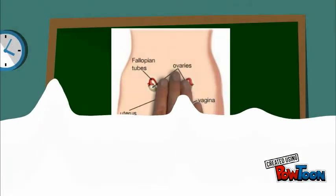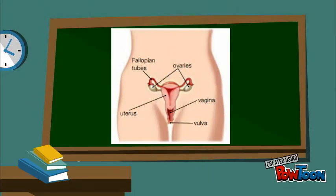And here you are, a drawing of the female reproductive system, with the ovaries, the fallopian tubes, the uterus, the vagina and vulva.